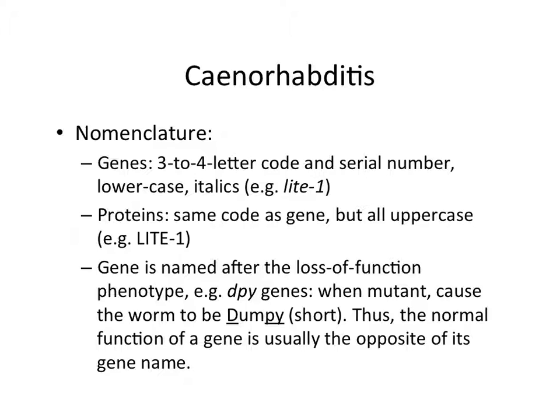The proteins have the exact same letters and numbers as the gene name, but they're uppercase and not italicized. The nomenclature for C. elegans is different from Drosophila nomenclature, which is different from yeast nomenclature. So if you really want to be an outstanding molecular biologist and geneticist, you have to memorize all of these different systems and their little idiosyncrasies.